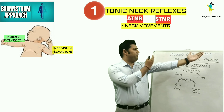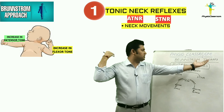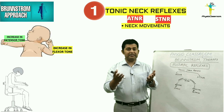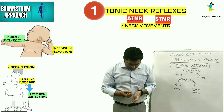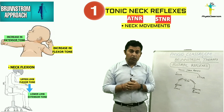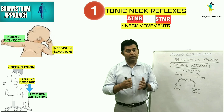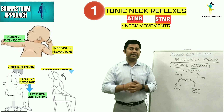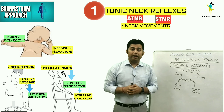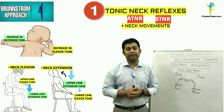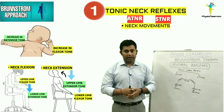and flexor tone on the occiput side limbs. Similarly, flexion of the neck increases the flexor tone in the upper limb and extensor tone in the lower limb, and extension of the neck increases extensor tone in the upper limb and flexor tone in the lower limb. These are the basic details about the ATNR and STNR reflexes.